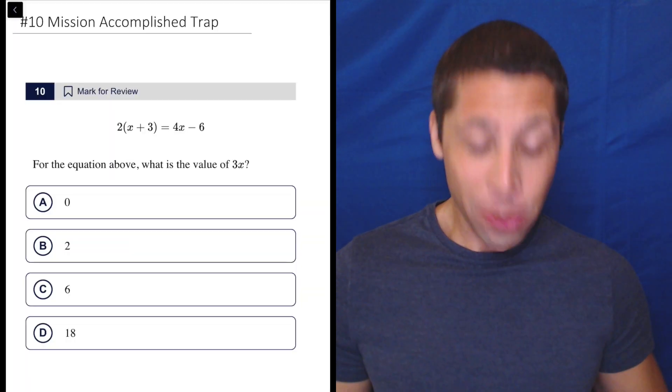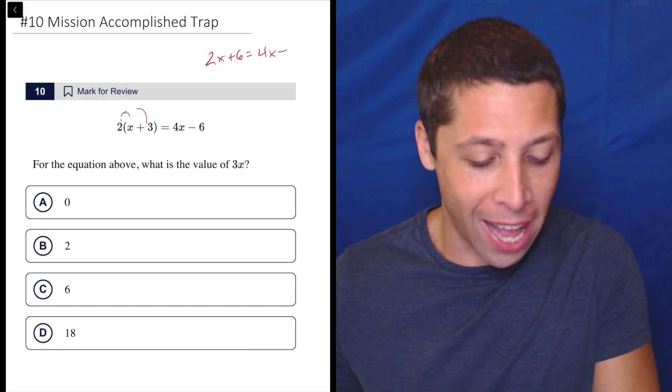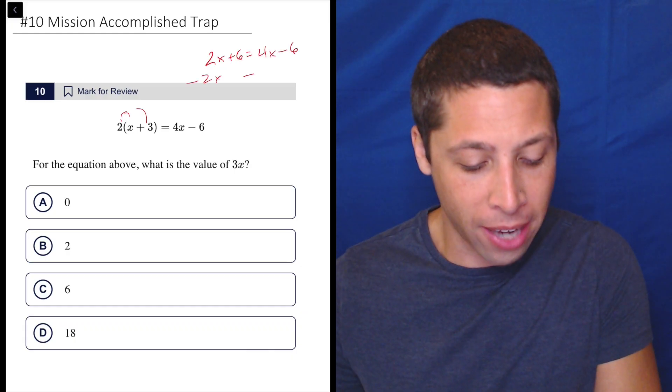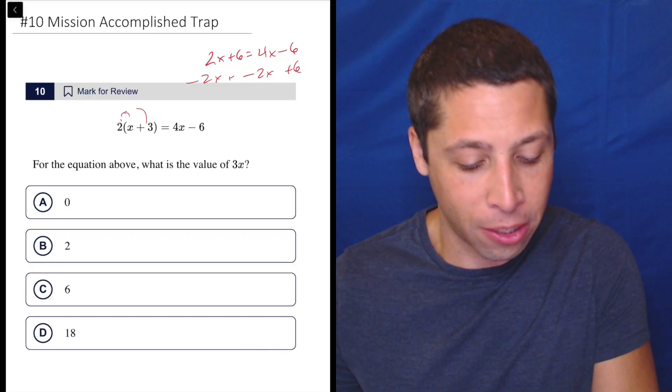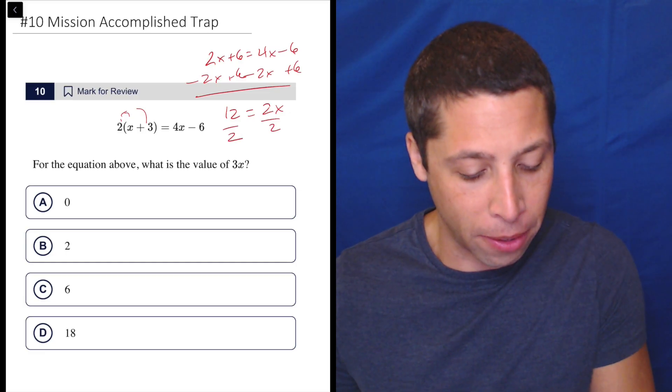This is not hard. Let's just do this algebra. So let's distribute. We get 2x plus 6 is equal to 4x minus 6. Subtract 2x. Subtract 2x. Let's add the 6 while we're at it. We get 12 is equal to 2x. Divide by 2. Divide by 2.